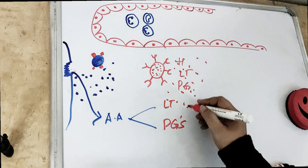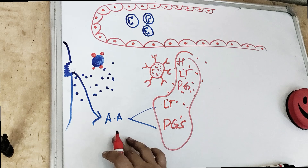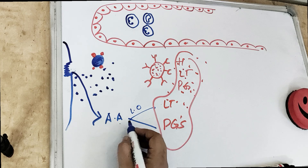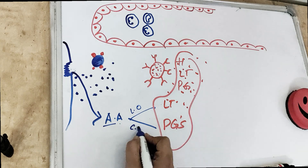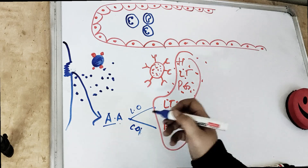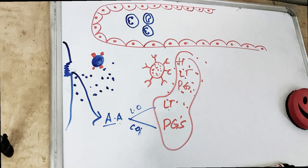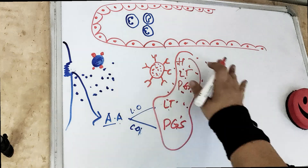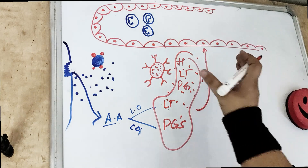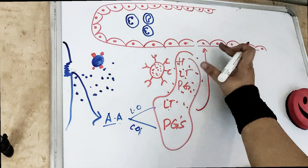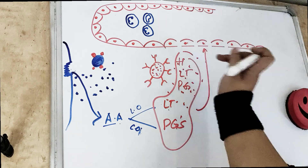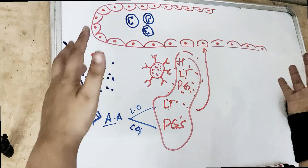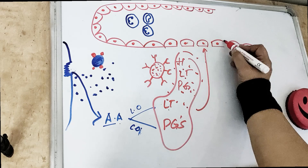These leukotrienes and prostaglandins — arachidonic acid in the presence of the lipoxygenase pathway gives leukotrienes, and arachidonic acid in the presence of the cyclooxygenase pathway gives prostaglandins. All of these substances act on the endothelial cells of blood vessels and cause vasoconstriction.